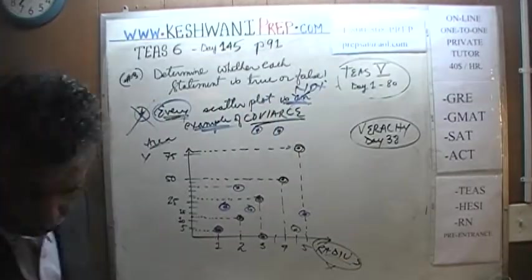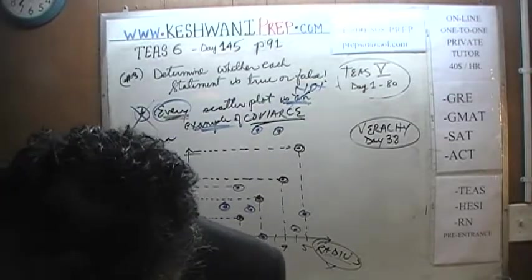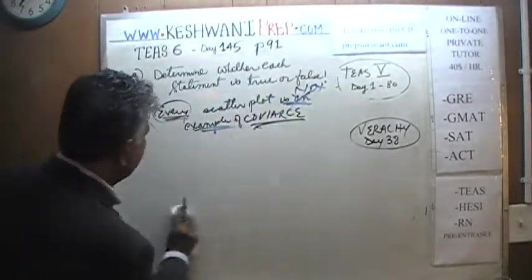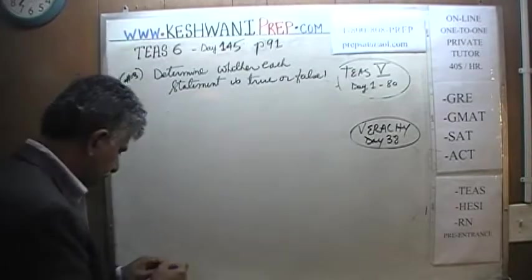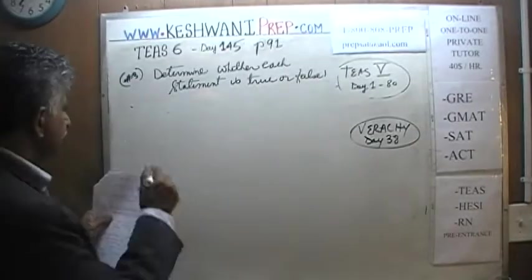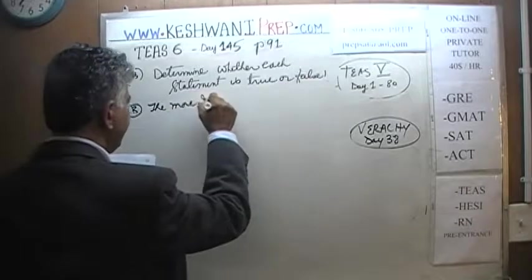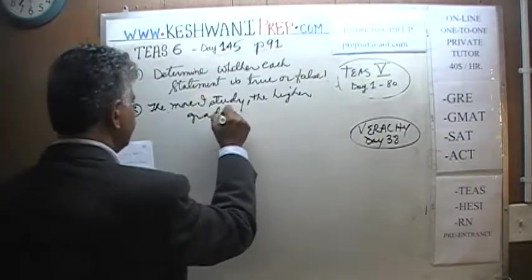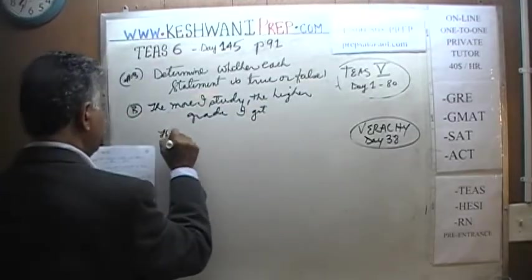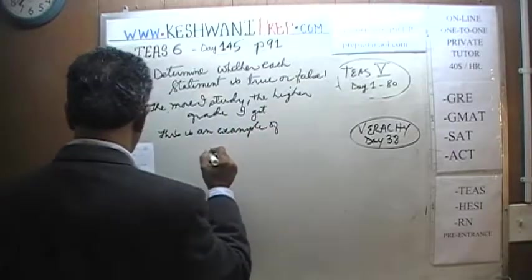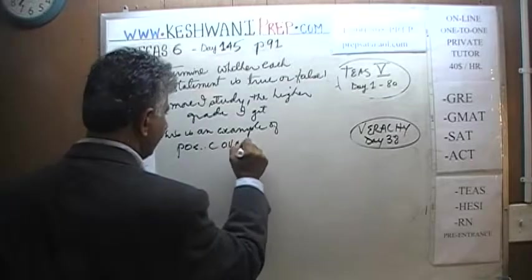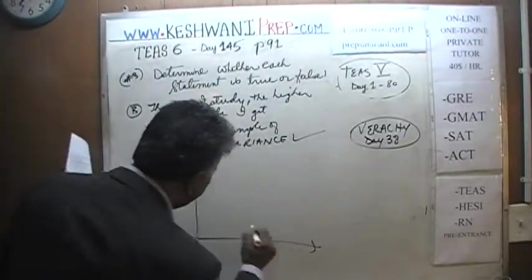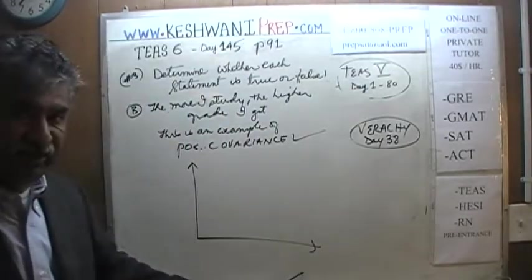Statement B says: the more I study, the higher grade I get. This is stated to be an example of positive covariance — and that is true. If we were to measure on our axes, you tell me: which of these two variables should go on the x-axis and which on the y-axis? Which variable depends on what?